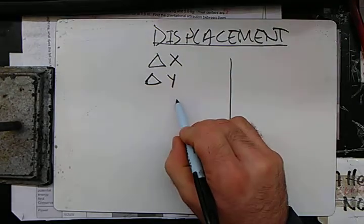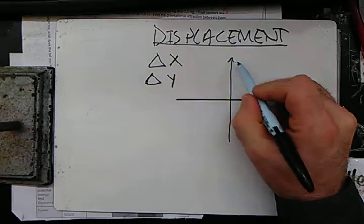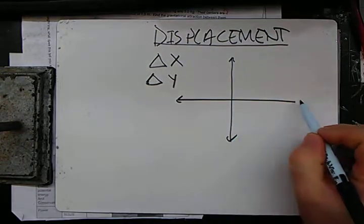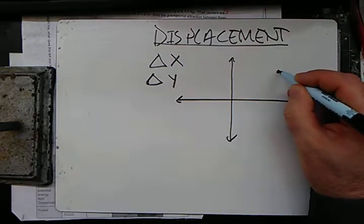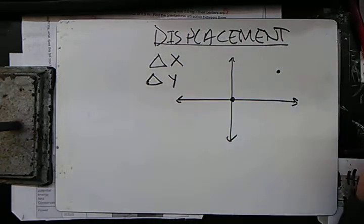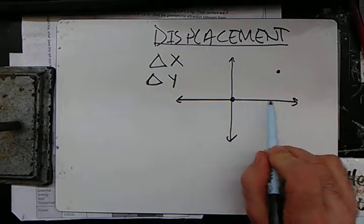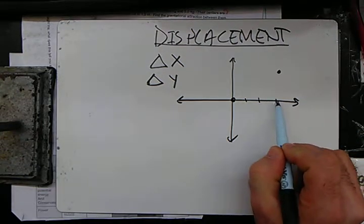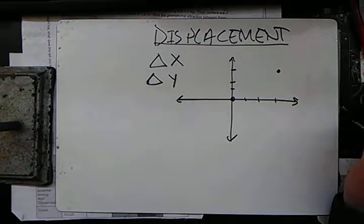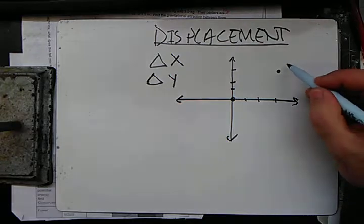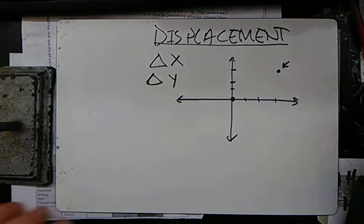Okay, here's an x and a y, we call a Cartesian plane. And let's say our origin is here, this is where we start. We start here, and we got to get here.